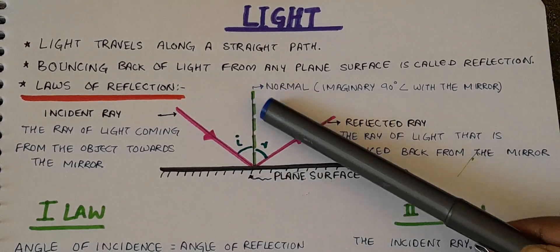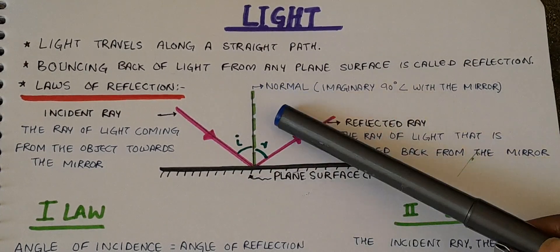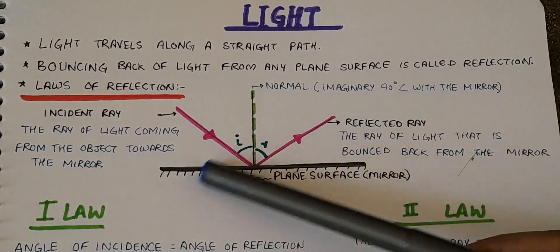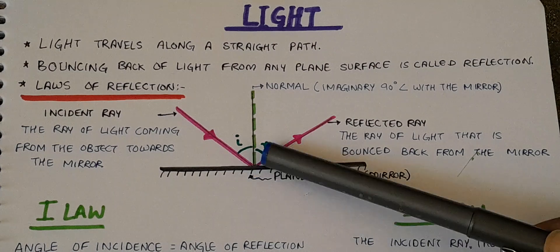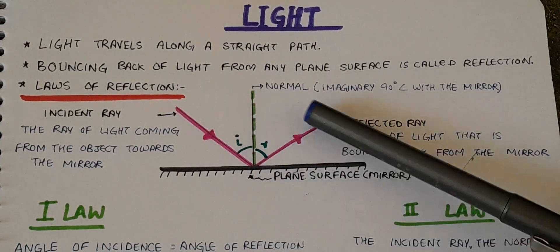Here, in the center, we see a green color line, which is normal. Normal is an imaginary 90 degree angle with the mirror. This imaginary perpendicular line is called the normal.